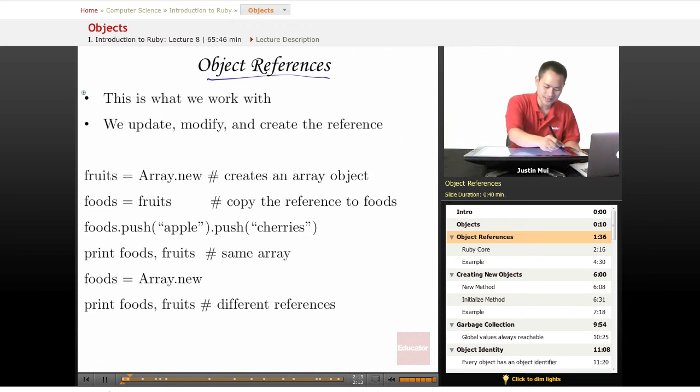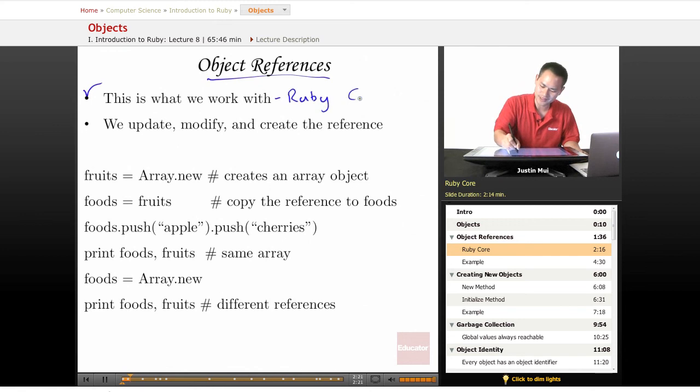Especially if we're working with the built-in Ruby core. So this is, that's why here I say this is what we work with. When we're working with the Ruby core, any of the Ruby core libraries, we're working with references. Because we're not creating the actual classes for this, it's already been created. We're just using those classes to do our development in our code. So what we do is, we actually just do the updates, the modifications, and the creations for those references.